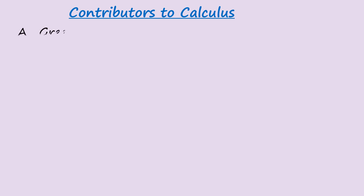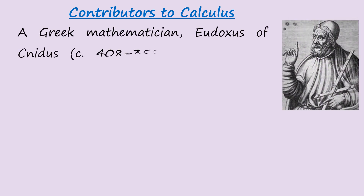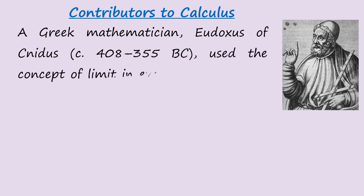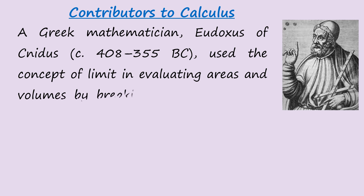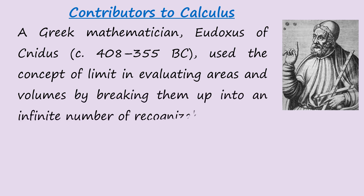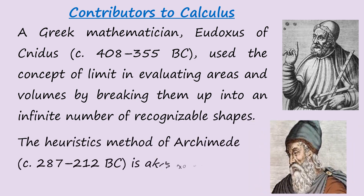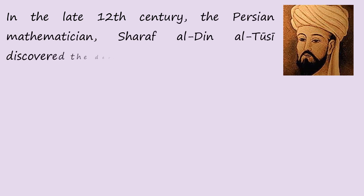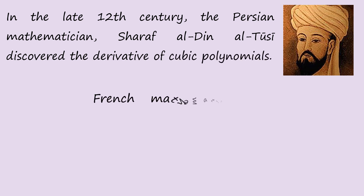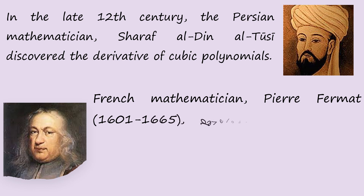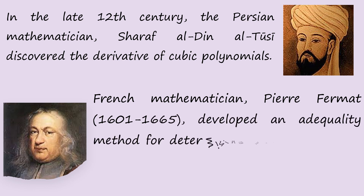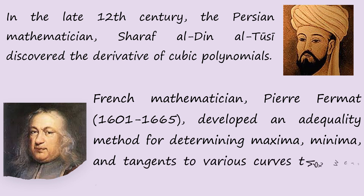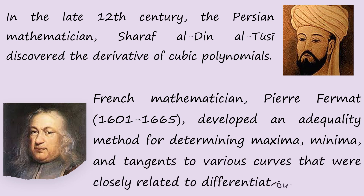Contributors to calculus: Greek mathematician Eudoxus of Cnidos used the concept of limit in evaluating areas and volumes by breaking them up into an infinite number of recognizable shapes. The heuristic method of Archimedes is akin to the methods of integral calculus. In the late 12th century, the mathematician Sharaf al-Din al-Tusi discovered the derivative of cubic polynomials. French mathematician Pierre de Fermat developed an adequate method for determining maxima, minima, and tangents to various curves, closely related to differentiation.